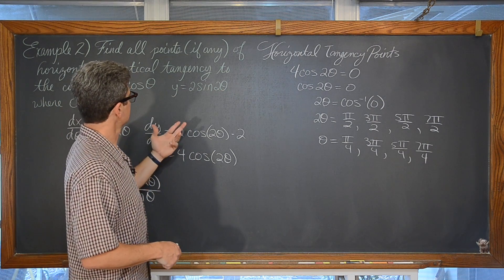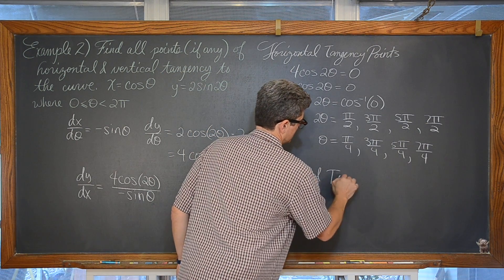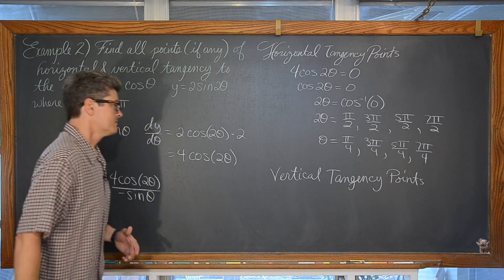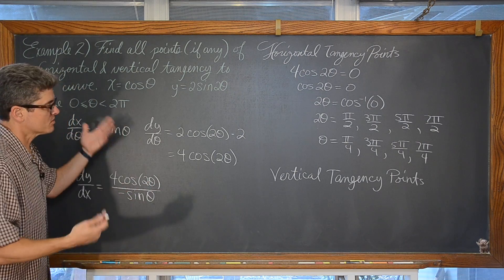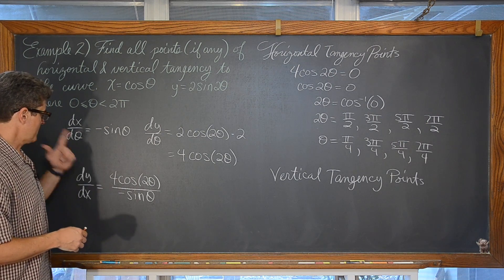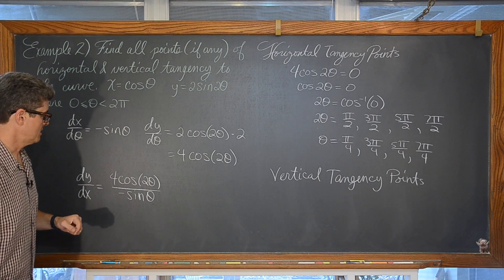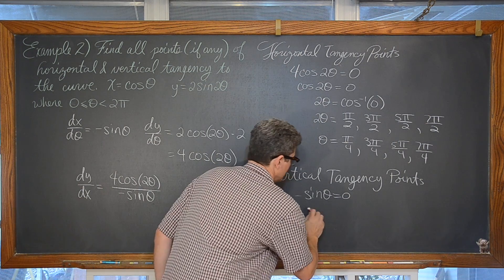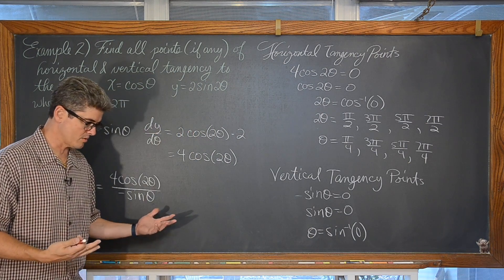For vertical tangency points, our derivative is undefined when the denominator equals zero. A slope which is undefined indicates vertical tangency. We set negative sine of theta equal to zero, so sine of theta equals zero. Theta equals the inverse sine of zero, which gives theta equals 0 and theta equals pi. We then plug these into the parametric equations to find the two points of vertical tangency.